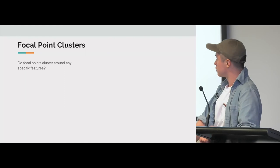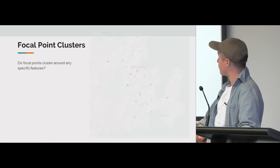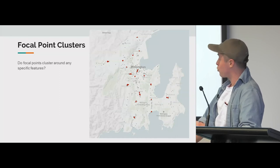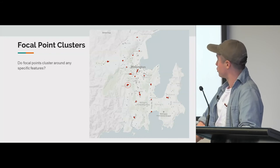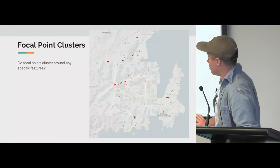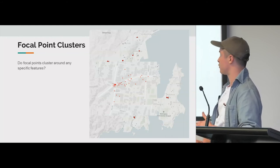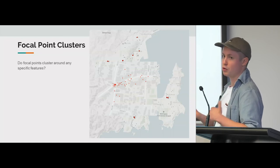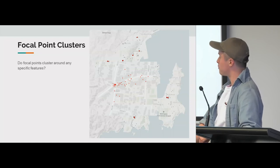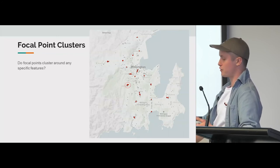For the focal points, I clustered them. I was interested in whether they clustered around any specific features. Everything in red were significant clusters and everything in black were non-significant. For example, in Brooklyn, zooming in, that's the neighbourhood shops — that was the most common cluster. The neighbourhood's main shopping area where you find your dairy or takeaways.